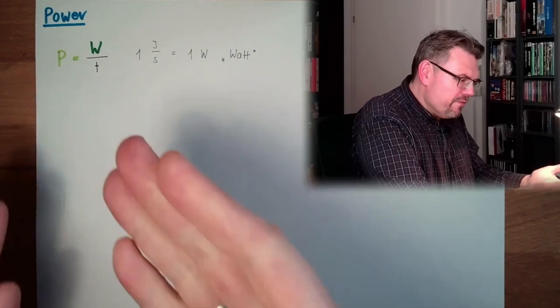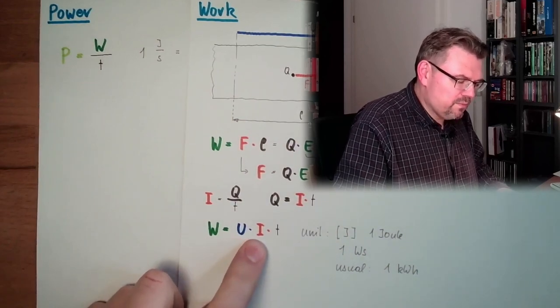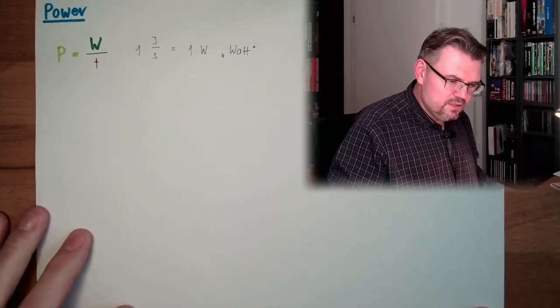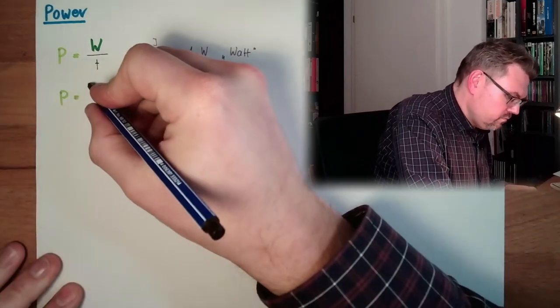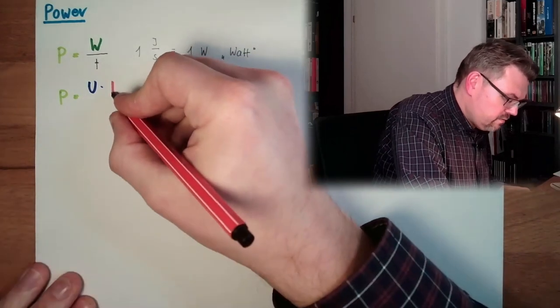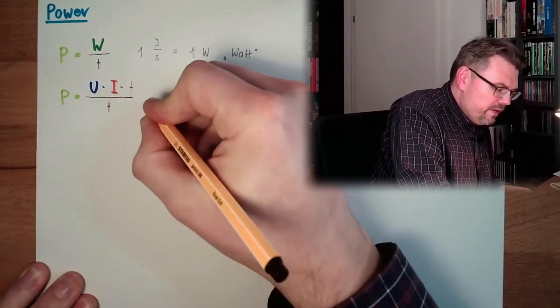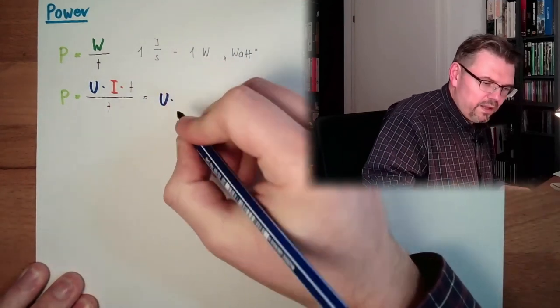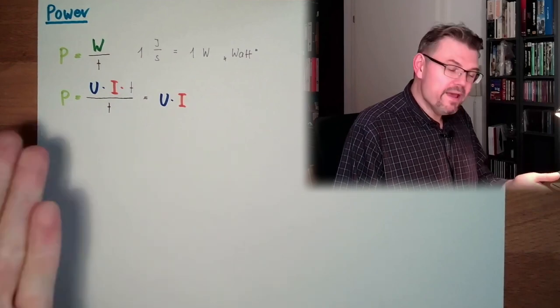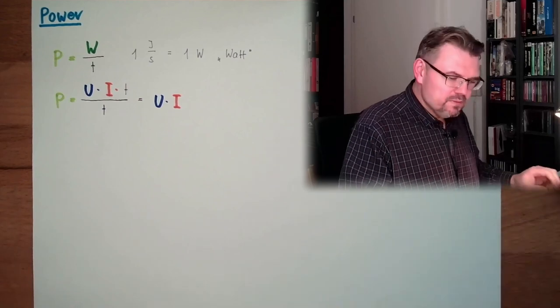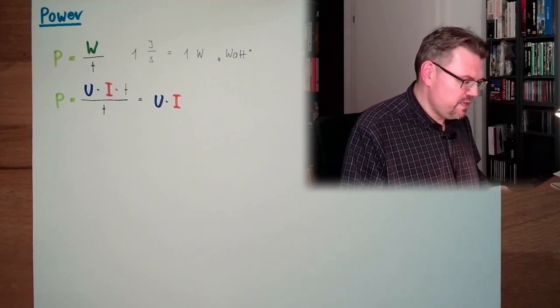And when we remember what was work in electrical units, work was voltage multiplied by current multiplied by time. So actually, if we are using this here, P equals voltage multiplied by current multiplied by time divided by time. Then we reach U multiplied by I. Actually, this is the formula most of the people know. Power is voltage multiplied by current. P is U multiplied by I.